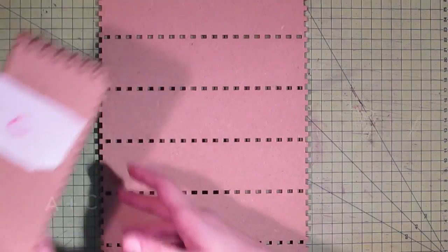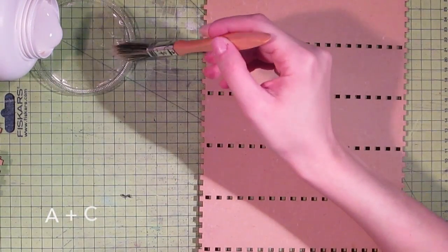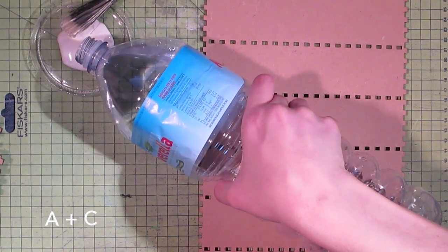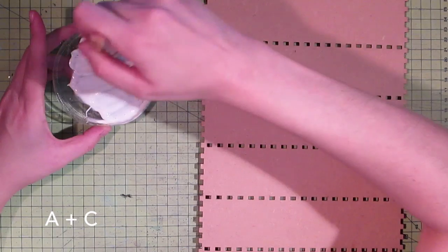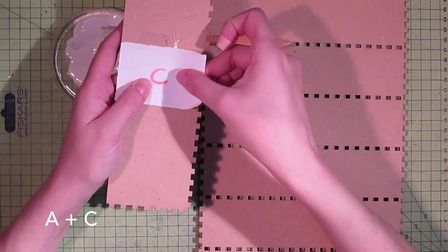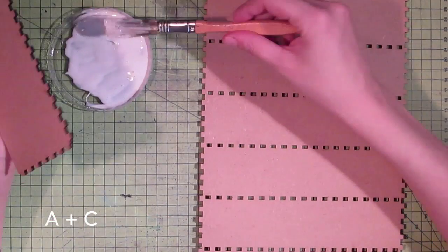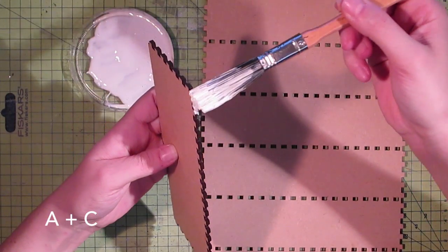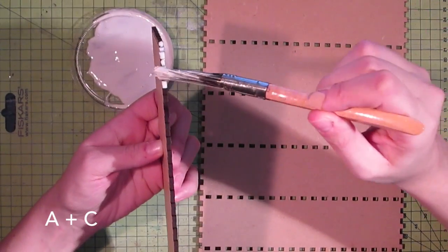Let's take panel A and panel C. Mix white glue with a little bit of water and put it on the wider side of panel C.